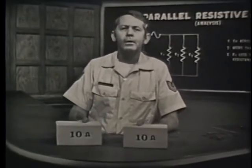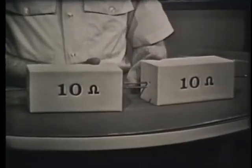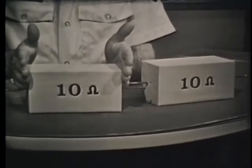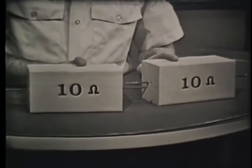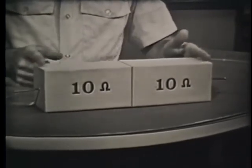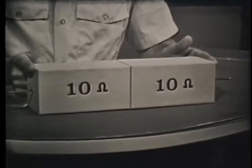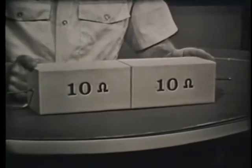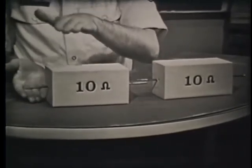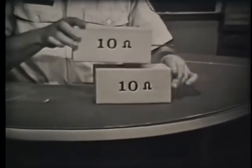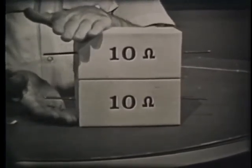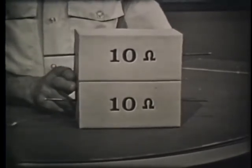Suppose that these two blocks are carbon resistors. We learned that the resistance of a particular material is directly proportional to the length. Suppose each block represents 10 ohms. If I connect the two resistors in series, we increase the length — therefore we increase the resistance. If we double the length, we double the resistance. We also learned that resistance is inversely proportional to the cross-sectional area. If I place these two resistors side by side, I've doubled the cross-sectional area, which decreases the resistance by one half — we now have only five ohms.